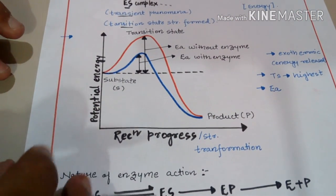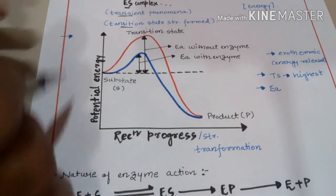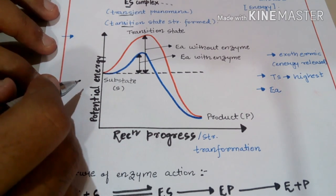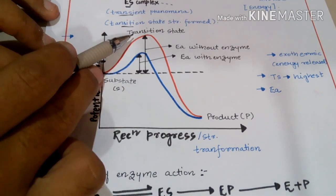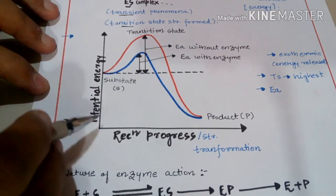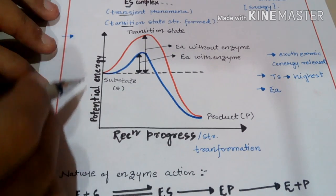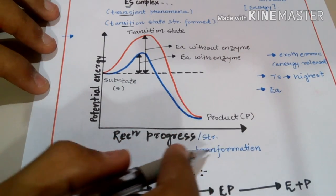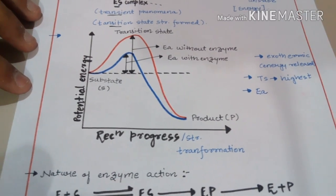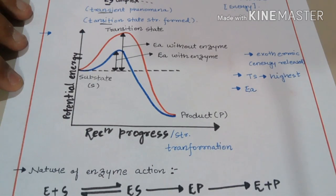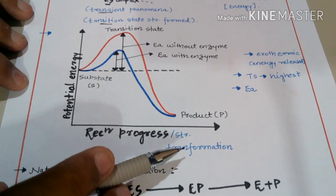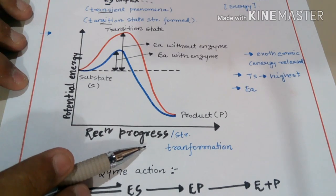Now let's look at a very important diagram, which is very important from an examination point of view. In this graph, the Y-axis represents potential energy — the energy present in different substances such as the substrate, transition state, intermediate state, or products. The X-axis shows the reaction progress or structural transformation, because in a reaction old bonds break and new bonds form, representing changes in structures.